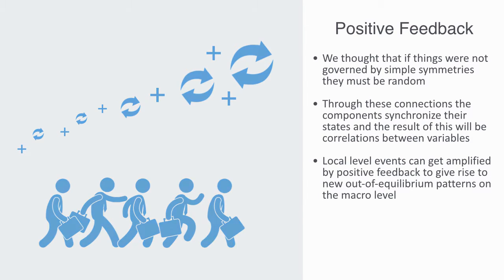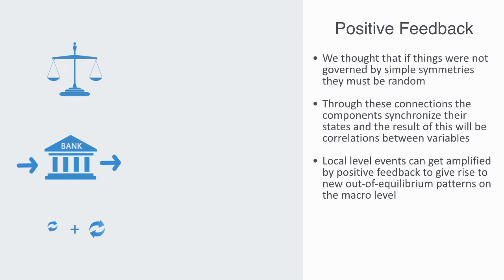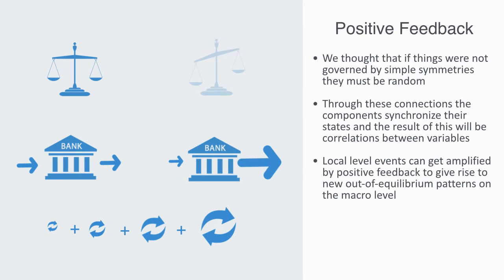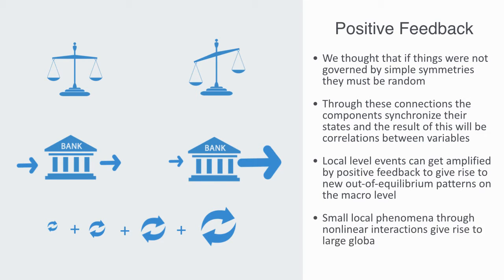Bank runs are good examples of this. Starting from some initial equilibrium on the micro level — say the bank balance sheet where inflow and outflow are being matched — we then get some small event and this balance is broken through some loss of confidence, which gets amplified by positive feedback, where the more people that lose confidence, the more other people are attracted to do likewise. And this may not stop at one bank, but in fact results in the emergence of a systems-level phenomenon. Thus we see a small local phenomenon through non-linear interactions giving rise to a large global state of disequilibrium.